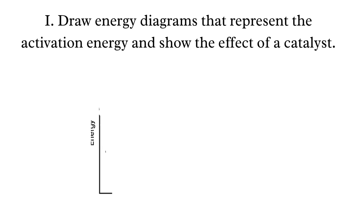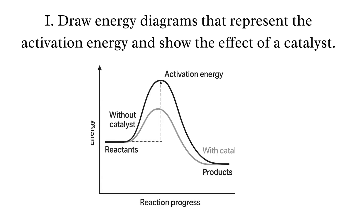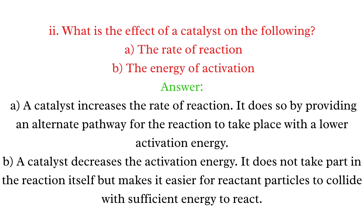Short Questions. Q1: Draw energy diagrams that represent the activation energy and show the effect of a catalyst. The diagram includes x-axis (reaction progress) and y-axis (energy). The uncatalyzed path has a higher peak, and the catalyzed path has a lower peak. Label: activation energy is lower in the presence of a catalyst.